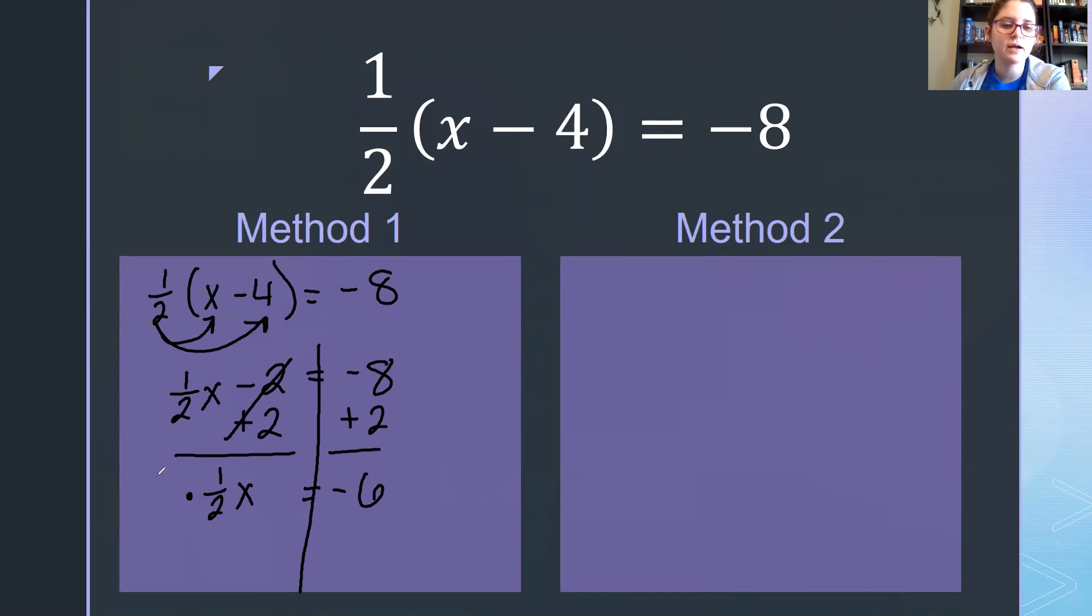Now I need to undo my fraction. And remember, we undo fractions by multiplying by the reciprocal, which would be 2 over 1. What I do to one side, I have to do to the other. My fractions will cancel, leaving me with x equals negative 6 times 2 is negative 12.